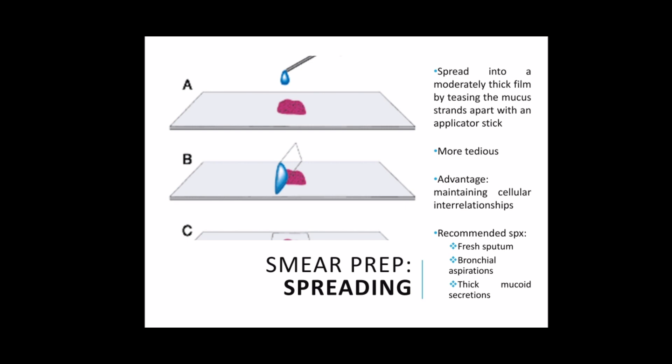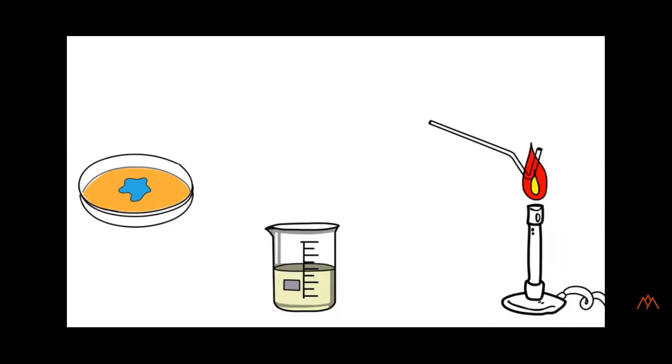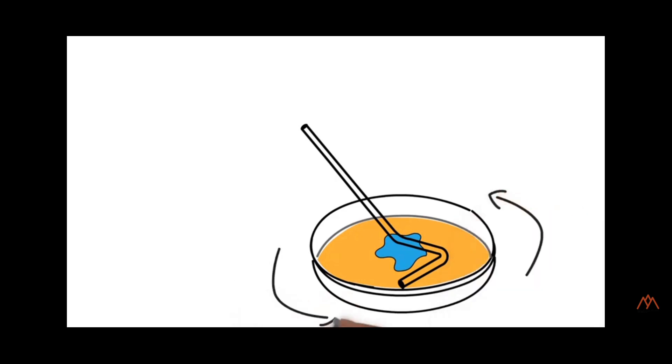Still under smear preparation, we have spreading. A selected portion of the material is transferred to a clean slide and gently spread into a moderately thick film by teasing the mucous strands apart with an applicator stick. This method is a little more tedious than streaking, but has the advantage of maintaining cellular interrelationships of the material to be examined. It is especially recommended for smear preparations of fresh sputum, bronchial aspirates, and thick mucoid secretions.